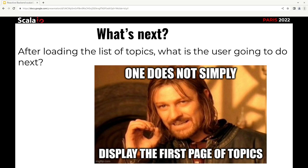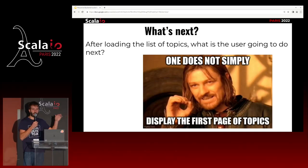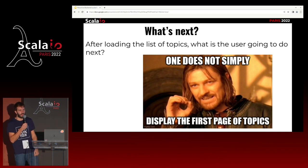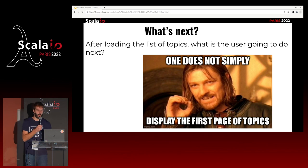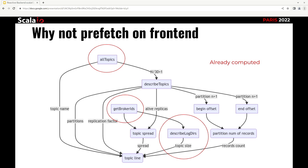We could finish the talk here and say we came up with a good solution — it was easy to do. But no, it's not done, because a user doesn't just go to the first page and stop. A user wants to do more than that. A user arrives at the first page and will probably filter by name to find specific topics, or go to the second page. A solution would be to have the front-end prefetch the second page and open a new stream. But that's not the best solution, because between the first and second page there is common data we already fetched that we'll need again — for example, the list of topics and the logs about topic sizes.